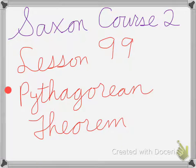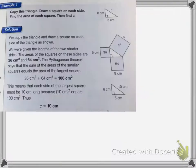Saxon course 2, lesson 99 is on the Pythagorean Theorem. So if we were to take this triangle and copy, draw a square on each side, it wanted us to find the area of each square and then find the side of C.